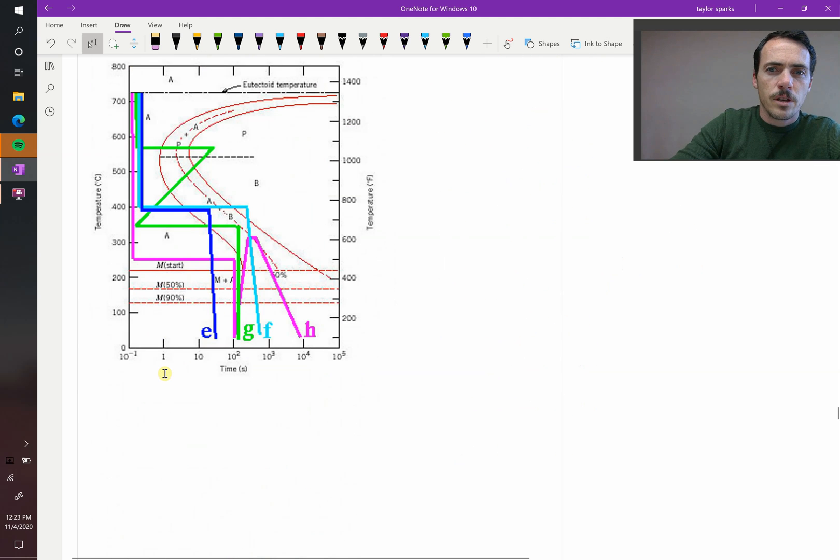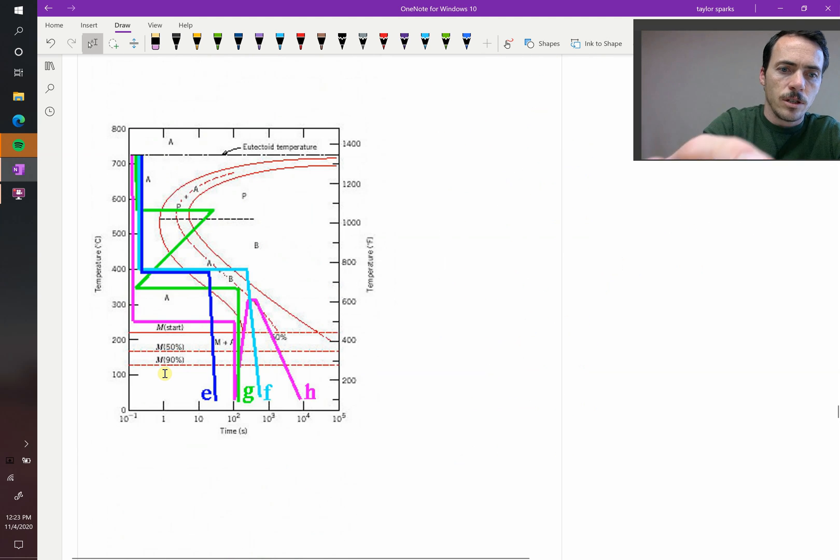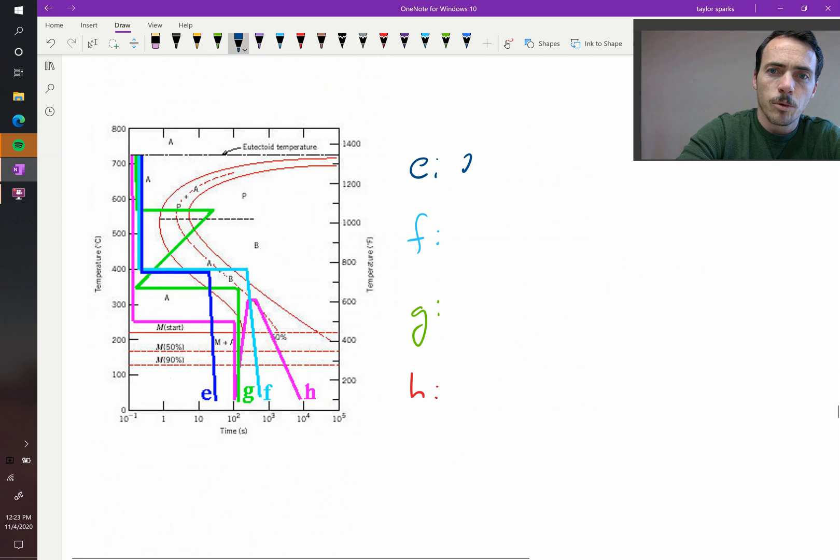Let's do a couple more. How about this one over here? Here, so we're going to do E, F, and G. E, they quench it past the nose, and then they hold it to about 25% bainite. So we're going to have 25% bainite, and then they quench it down, so the rest is going to turn into martensite, so that's going to be 75% martensite, everything that was left over.